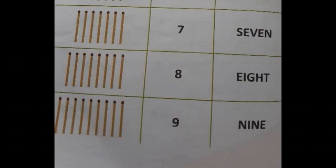In the next row total number of math sticks 8. So the number will write 8 and the number name E-I-G-H-T.